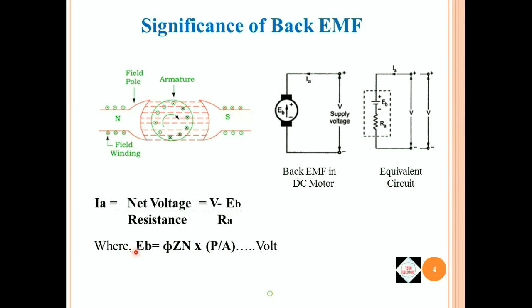When the motor armature rotates, armature conductor also rotates with it and cuts the magnetic field set up by the field winding. So, according to Faraday's law of electromagnetic induction, an EMF is induced in it, whose direction can be found out by Fleming's right hand rule which is in opposition to the supply voltage.